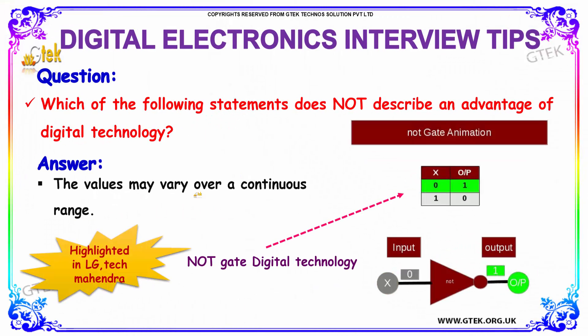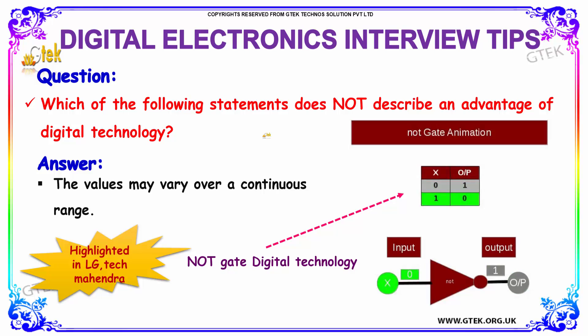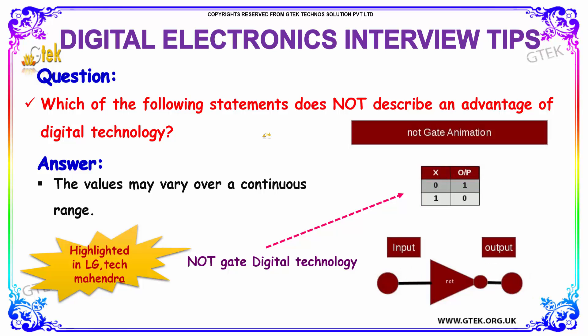The next question is: which of the following statements does not describe an advantage of digital technology? The answer is: the values may vary over a continuous range.